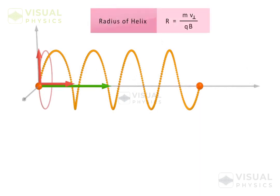Now, radius of circular path is the radius of helix, and this distance between two successive cycles is called the pitch of helix.